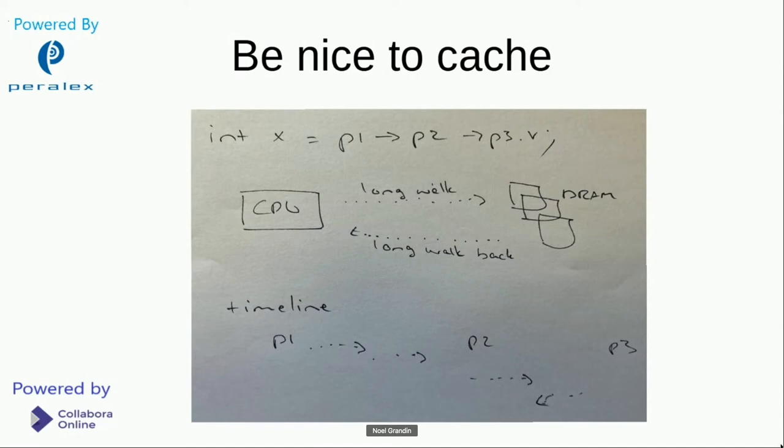And the CPU is effectively stalled until it gets that data back from RAM, and then stalled again when you fetch the next one. So you're bouncing through RAM, and you're really slowing things down. So ideally, we want to try and co-locate stuff to reduce the amount of time we spend fetching stuff from DRAM.